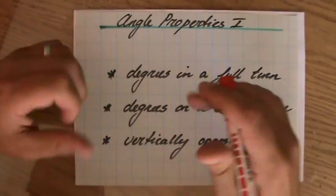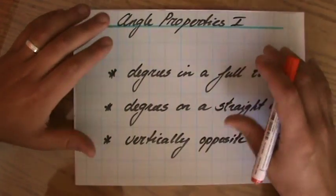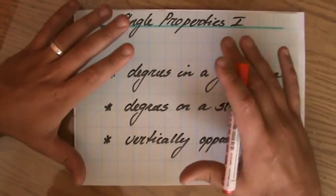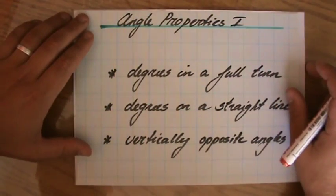Welcome to this playlist about geometry and angle properties. In various videos we're going to talk about exterior angles, interior angles, we're going to look at parallel lines, we're going to look at different types of polygons and their angle properties.